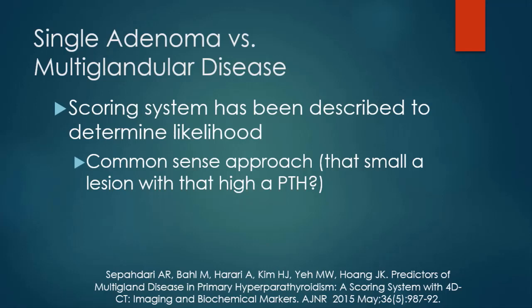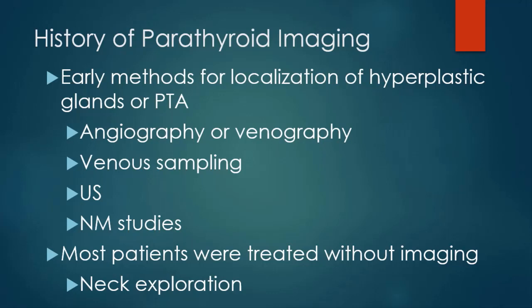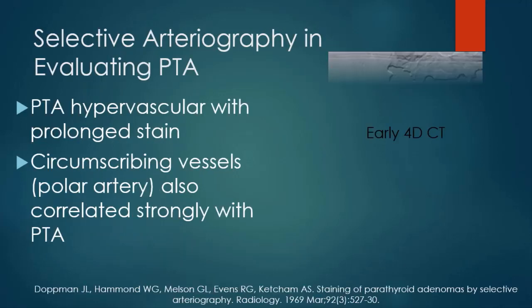I love medical history, and this is an important one. The history of parathyroid imaging leads to what we do currently. Early on, patients were referred to the NIH — it was thought to be an orphan disease. Patients underwent many imaging studies, but angiography and venography were quite important. Overall, however, most patients were treated without imaging at all and underwent neck exploration to look at all four glands.